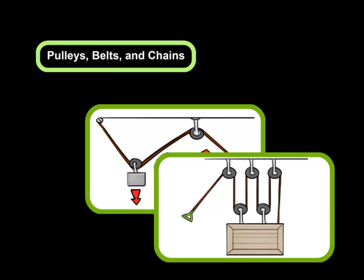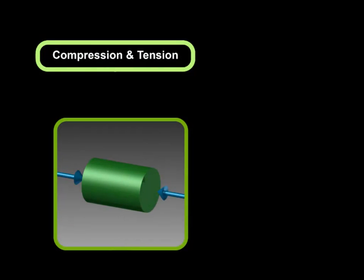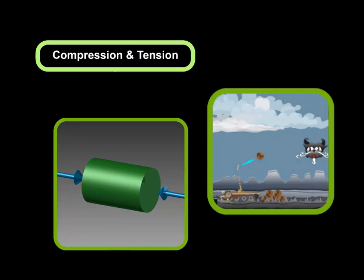Finally, we have compression and tension forces, which are opposite forces that will need to be considered during the design process. Compression forces are those which compact or crush an object. In the mousetrap catapult game, the impact of a projectile with the target will cause a compression force.